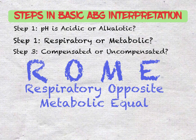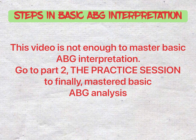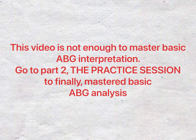Do you remember the mnemonic ROME — respiratory opposite, metabolic equal? Others use this to simplify ABG interpretation, but I find it more confusing in real practice, as ABG interpretation does not always follow that mnemonic. The key to mastering ABG interpretation is by practicing it as many times as possible, and you will be surprised how easy it is. Are you confident now in doing basic ABG interpretation? To further master this, let's analyze different ABG results in the other video. Thanks for watching!